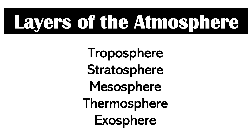There are five layers of the atmosphere: the troposphere, stratosphere, mesosphere, thermosphere, and exosphere. These layers are distinct from one another because of the way temperature behaves in them — they are mostly separated based on their temperature differences.